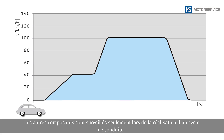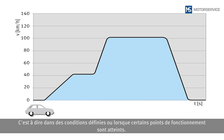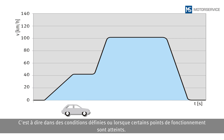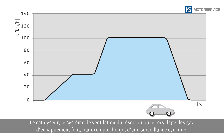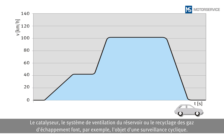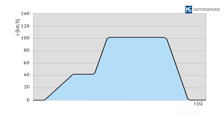Other components are only monitored when passing through a driving cycle — in other words, under specific operating conditions or if certain operating points have been reached. Examples of this cyclical monitoring include the catalytic converter, the fuel tank ventilation system, or exhaust gas recirculation.